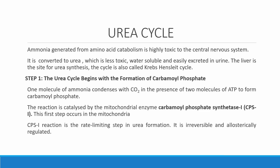The urea cycle is a five-step process involving five enzymes, and it occurs in the liver — specifically in hepatocytes. The cycle cuts across two compartments: the mitochondria and the cytosol of the liver cell. The cycle starts in the mitochondria.